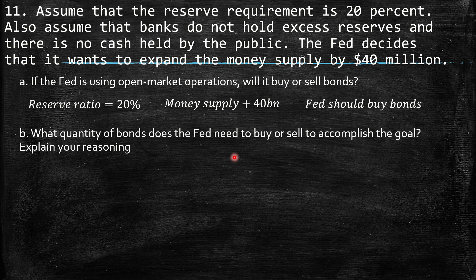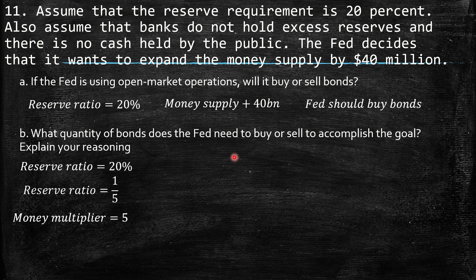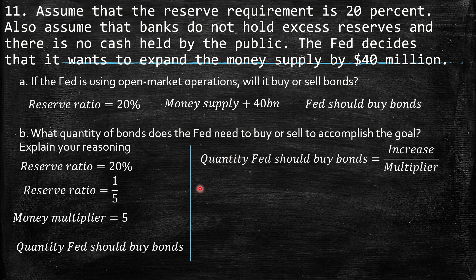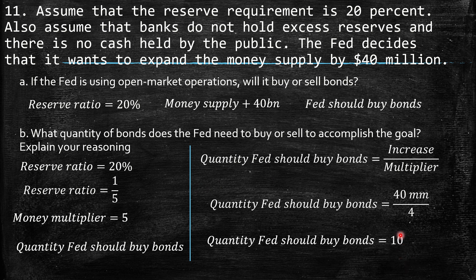Part B: What quantity of bonds does the Fed need to buy to accomplish the goal? The reserve ratio is 20%, equal to 1/5, so the money multiplier is 5. The quantity the Fed should buy equals the desired increase divided by the multiplier: $40 million / 5 = $8 million. So the Fed needs to buy $8 million worth of bonds.